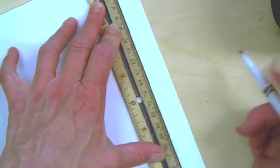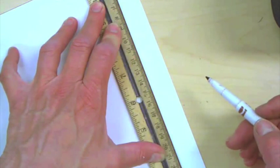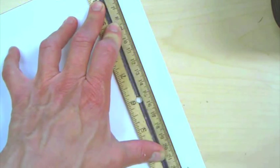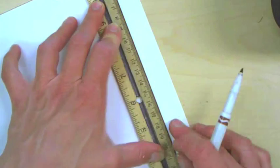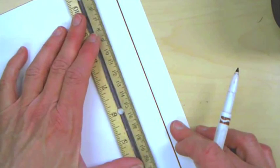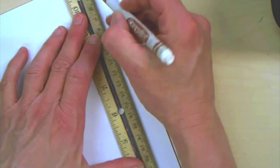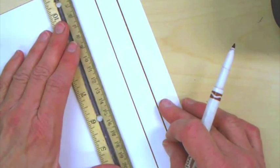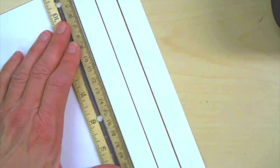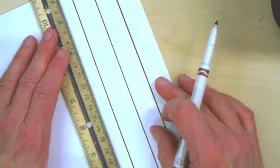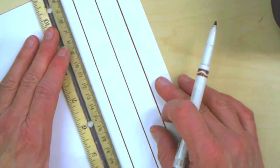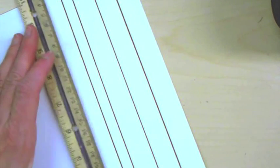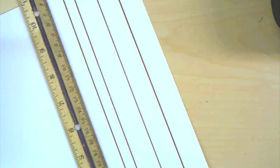So, I've got my non-dominant hand, in this case my left hand, holding the ruler down, and my right hand is on the right side of the ruler. Then I'm sliding that over, lining up my two marks, pulling the line down. Slide the ruler, line up the two marks, pull the line down. Slide the ruler, line up the two marks, pull the line down. Okay, so it should look something like that.